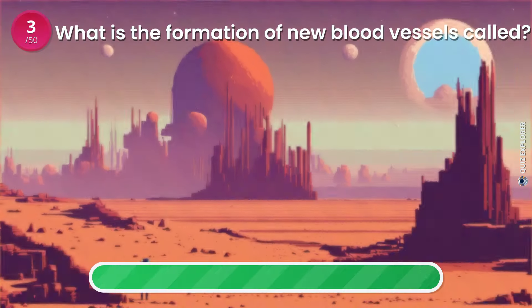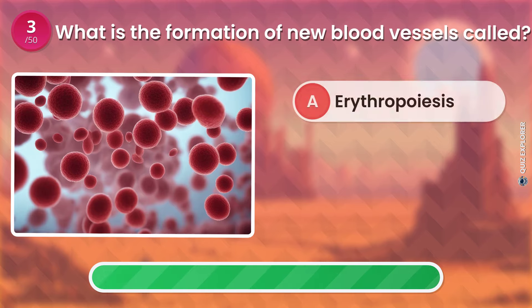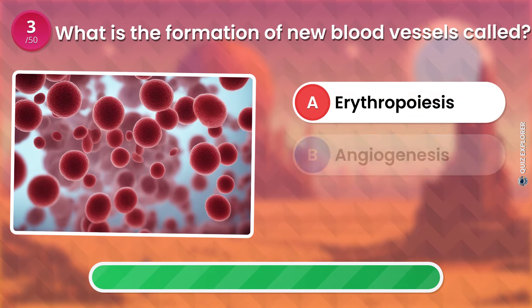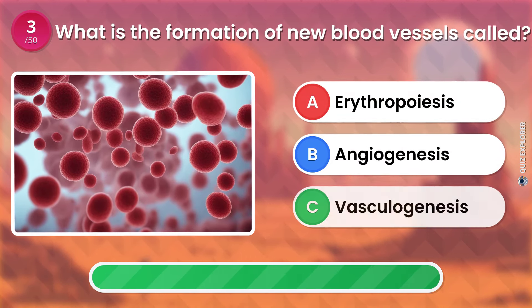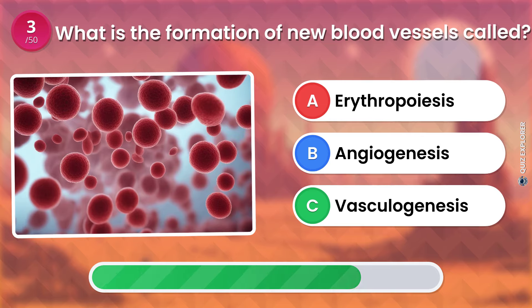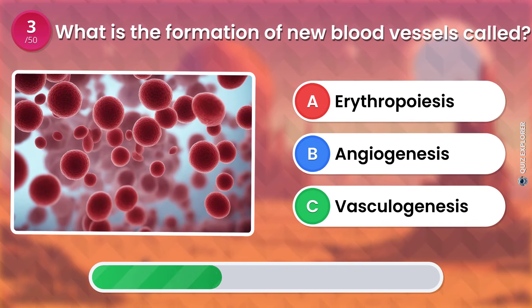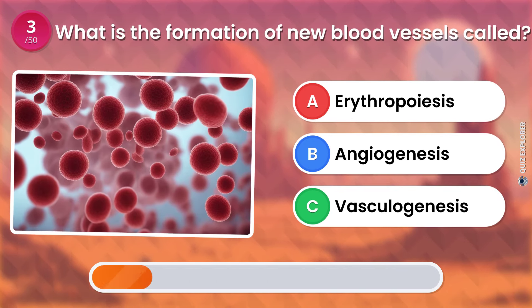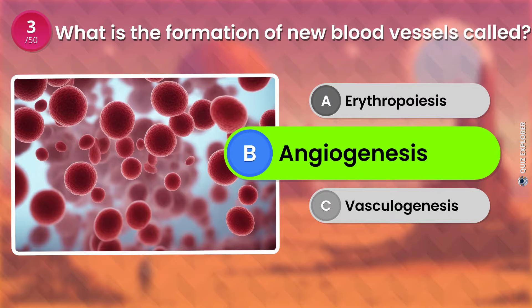What is the formation of new blood vessels called? Erythropoiesis. Angiogenesis. Vasculogenesis. The answer is: Angiogenesis.